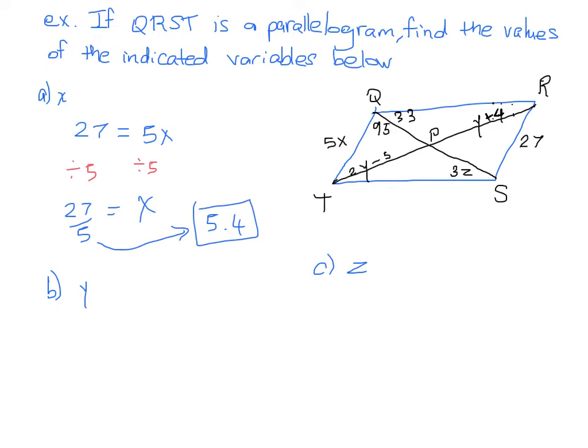But that had nothing to do with the diagonals at all. But now we are actually going to explore the diagonals. We know that the diagonals of a parallelogram have to bisect each other, which means that this half of that diagonal has to be equal to that half of the diagonal. Which means then that we know that 2Y minus 5 is going to be equal to Y plus 4.